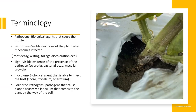Some basic terminology: pathogens are the biological agents that cause the problem. Symptoms are the visible reactions of the plant when it becomes infected — if you see a plant wilting or off-color in your field, that's the symptom. The sign is the visible evidence of the presence of the pathogen: sclerotia, bacterial ooze, mycelial growth. The picture shown is southern blight on tomatoes, which is very easy to diagnose in the field — you'll see white mycelial growth and orange or brownish sclerotia at the base of the plant.